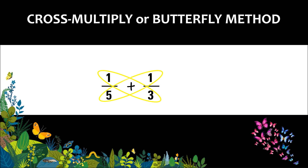The cross multiply or butterfly method is a very easy method because you just have to cross multiply. You will multiply the first numerator by the second denominator, and the second numerator by the first denominator. The results will be the new numerators.